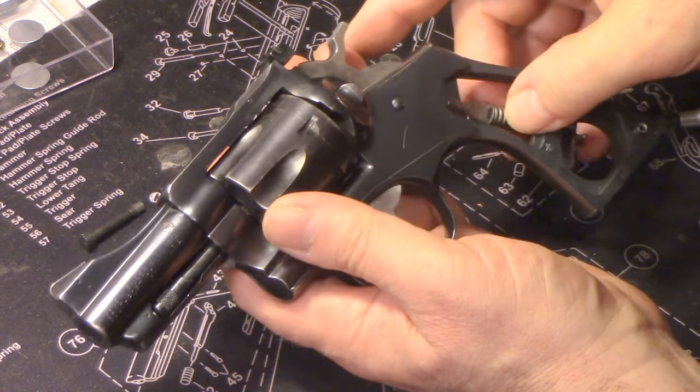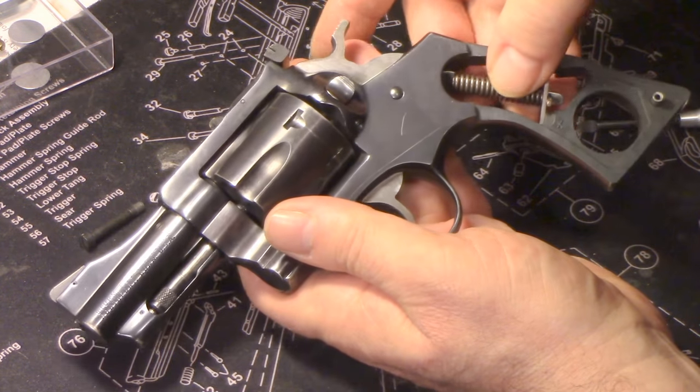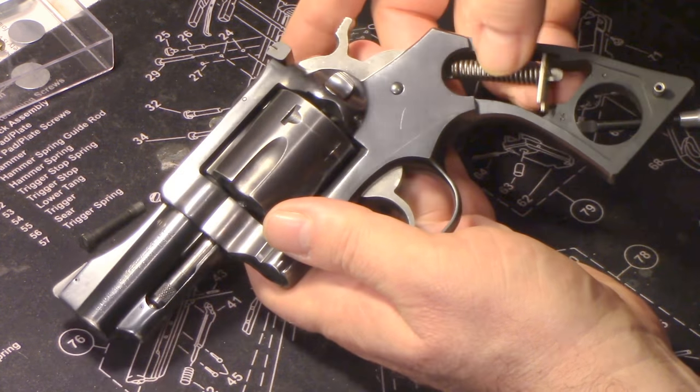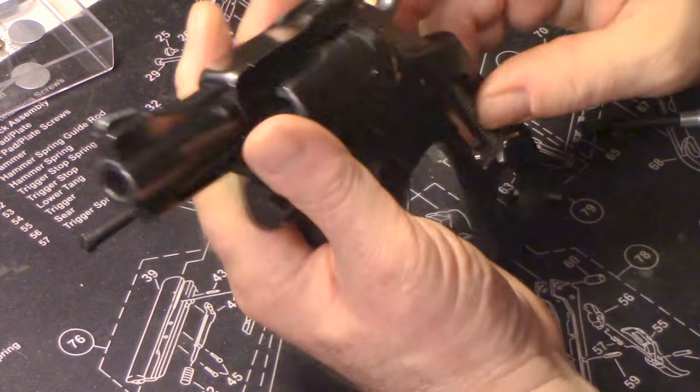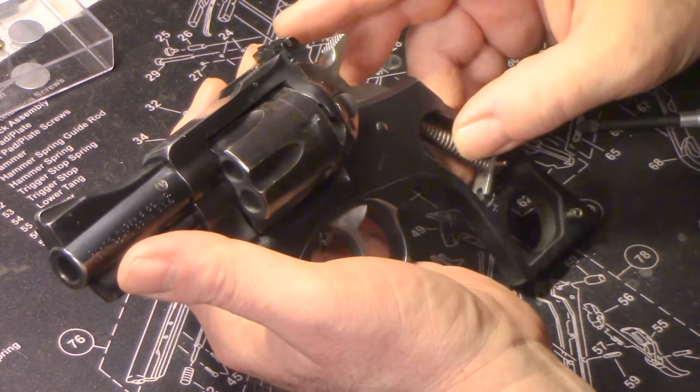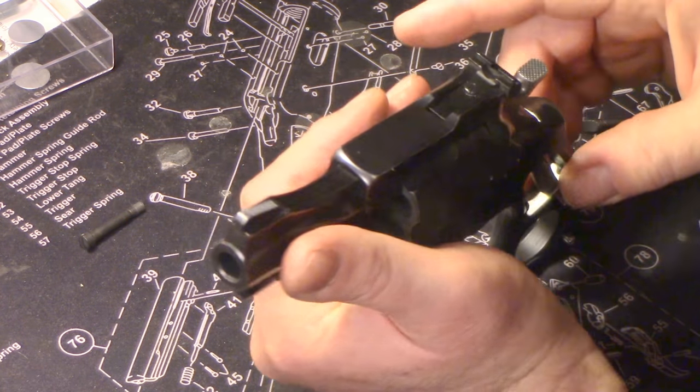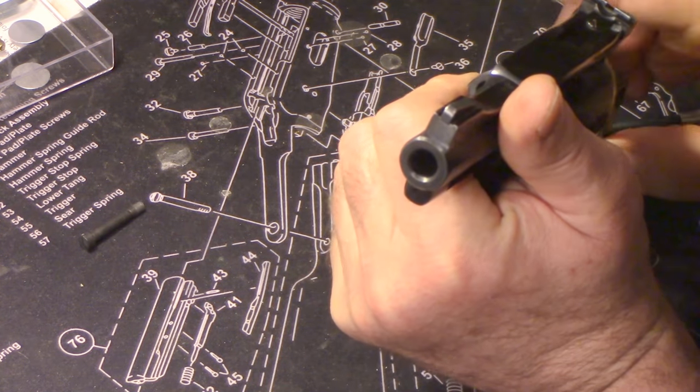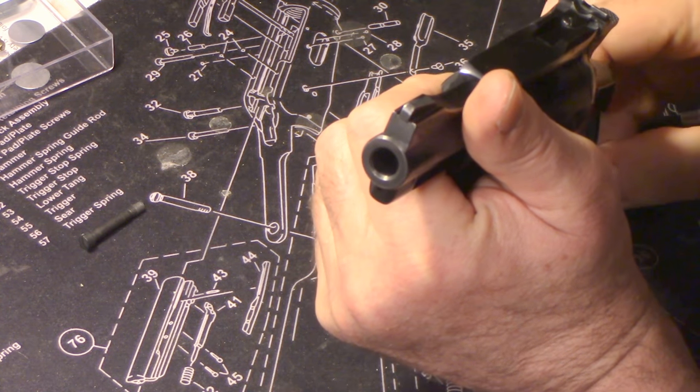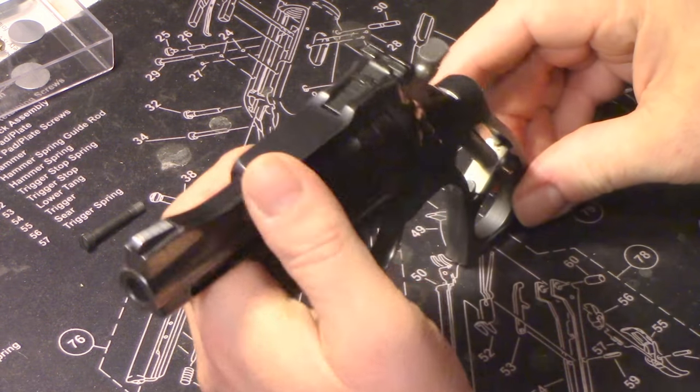So now we'll put the hammer spring back in. It's a loose assembly so it fits in real easily. You can see the longer leg fits towards the front of the pistol.